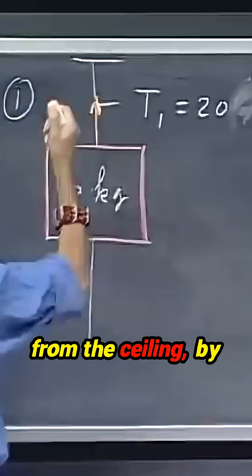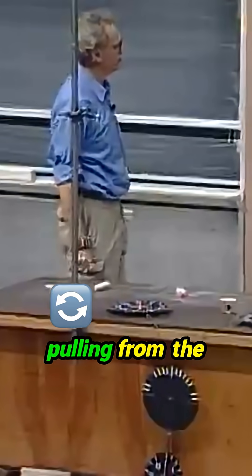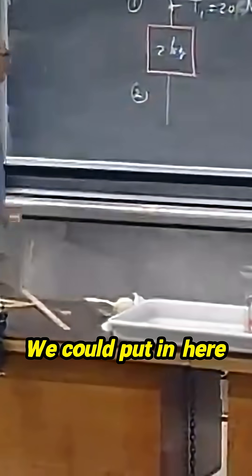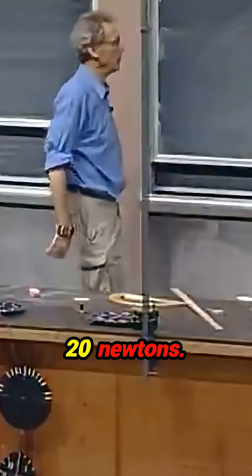It's also pulling down from the ceiling, by the way. Think about it. It's pulling, pushing, pulling from the ceiling. The tension is here twenty newtons. We could put in here one of these scales, and you would see approximately twenty newtons.